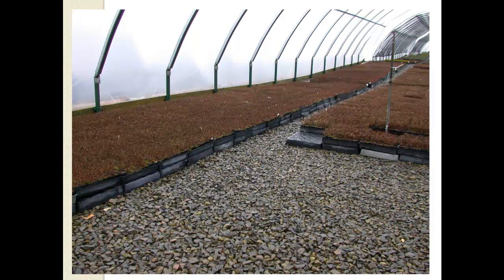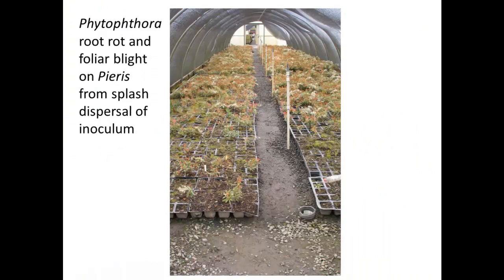In this hoop house they do not have a cement floor but they have a rock floor, and the containers are raised up above the floor by being placed on a layer of other flats — another way to prevent splash dispersal of inoculum from soil onto plants. In contrast, here is a situation where the rock has sunk into the mud preventing good drainage, and Phytophthora has splashed from puddles onto the plants causing root rot and foliar blight on these Pieris plants.